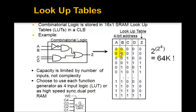This could be the truth table: a, b, c, d goes from 0, 0, 0, 0 to 1, 1, 1, 1 — there are 16 possible outputs for z. You just store that in the RAM, put in a, b, c, d as an address, and out comes z. So if you put in 0, 1, 0, 1, out comes a 1.